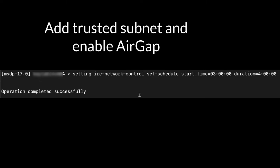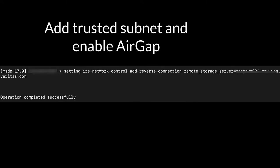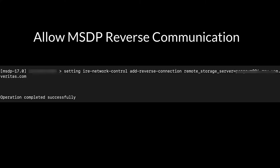Step 2: Configure the IRE air gap schedule to open and close unidirectional network in a specific window. Step 3: Enable MSDP Reverse Connection. Once the air gap is enabled, the production MSDP servers are no longer able to access the IRE MSDP server. You need to enable MSDP Reverse Connection from the IRE FlexWorm Storage Server to the production MSDP server, so that you can replicate backup images from the production MSDP server to the IRE FlexWorm Storage Server.